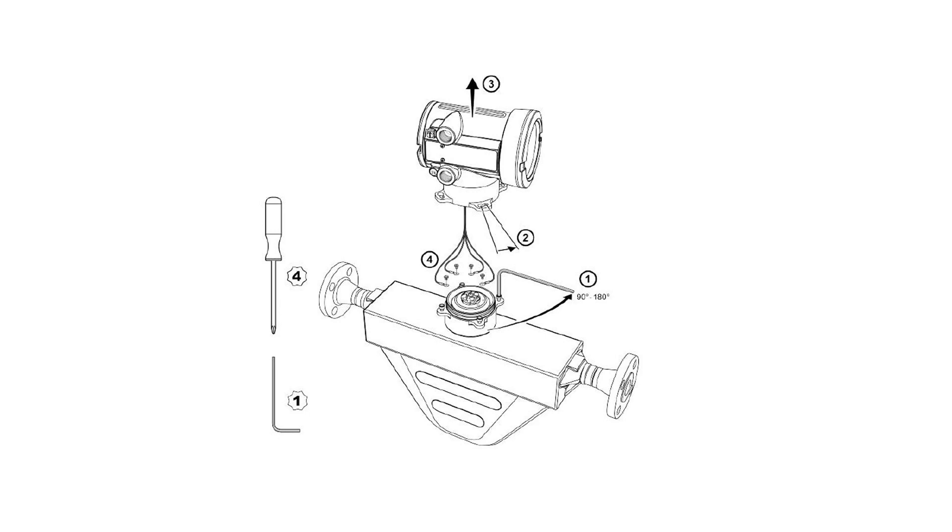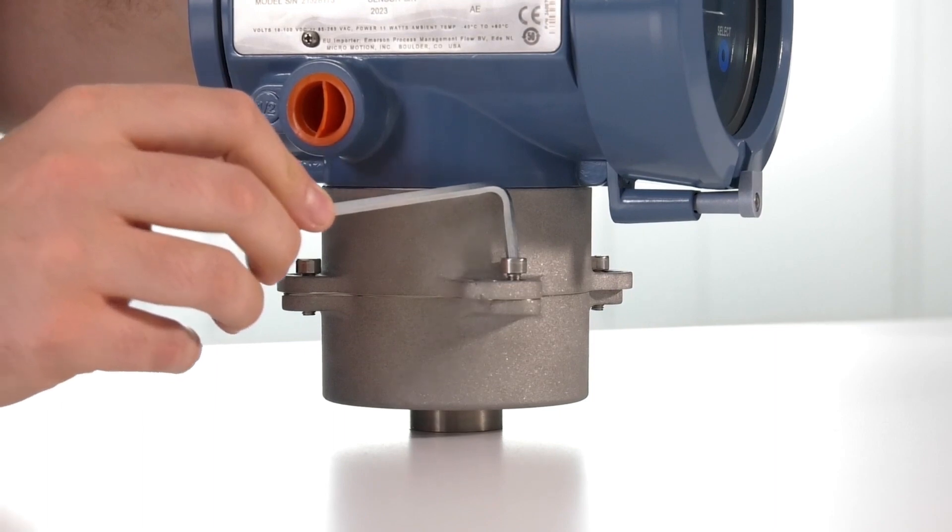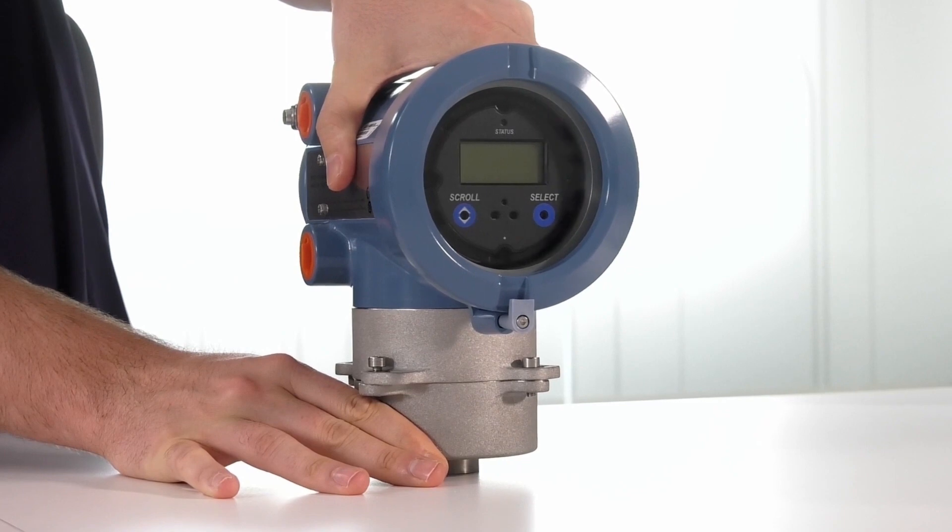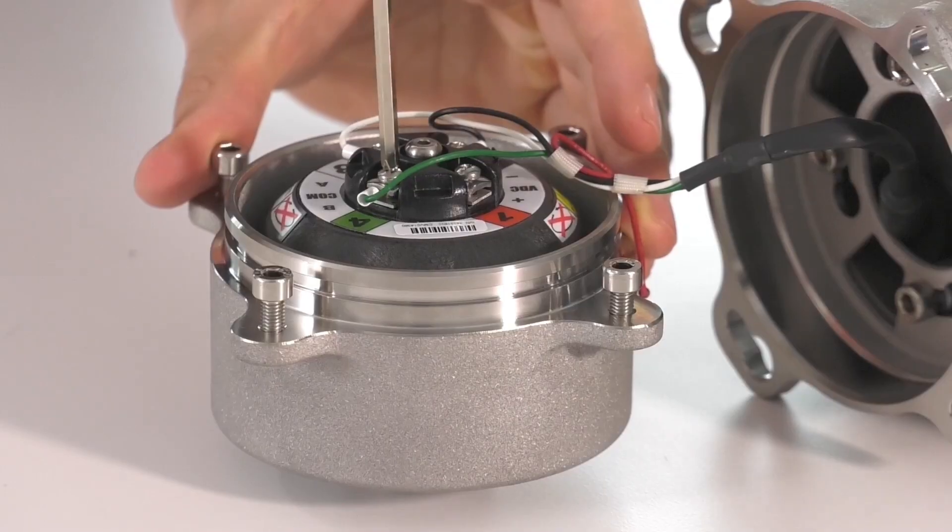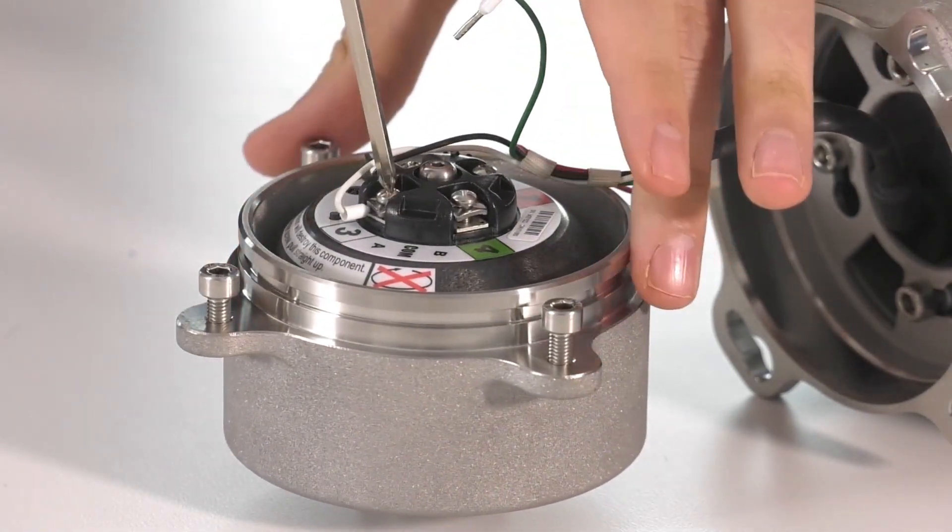First, we will remove the 1700 or 2700 transmitter. Using a four millimeter Allen wrench, loosen the four screws connecting the transmitter to the sensor. Rotate the transmitter mounting bracket anti-clockwise and lift upwards. Disconnect the wires connecting the transmitter to the core processor by using a screwdriver.